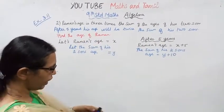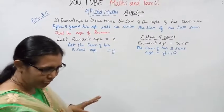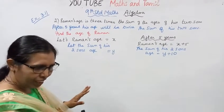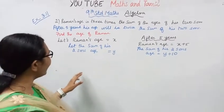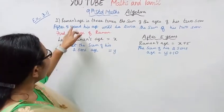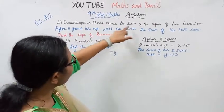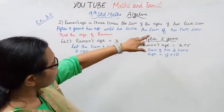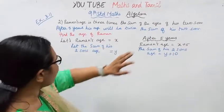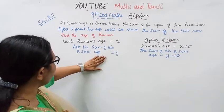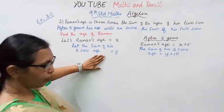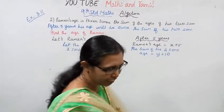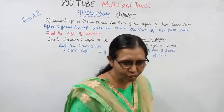How do you say that? Raman's age is 3 times the sum of the ages of his 2 sons. Now, students, 9th standard — 14 years. What do you say?